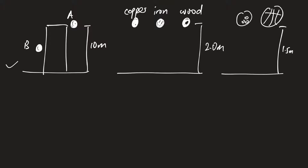If you release A and B at the same time, A will reach a higher speed just before hitting the ground because of its longer distance — it has more time to increase in speed. So just before reaching the floor, the speed of A will be greater than the speed of B. What's common for both of them is that acceleration due to gravity will be the same: 10 m/s², because their compact size means air resistance can be ignored.